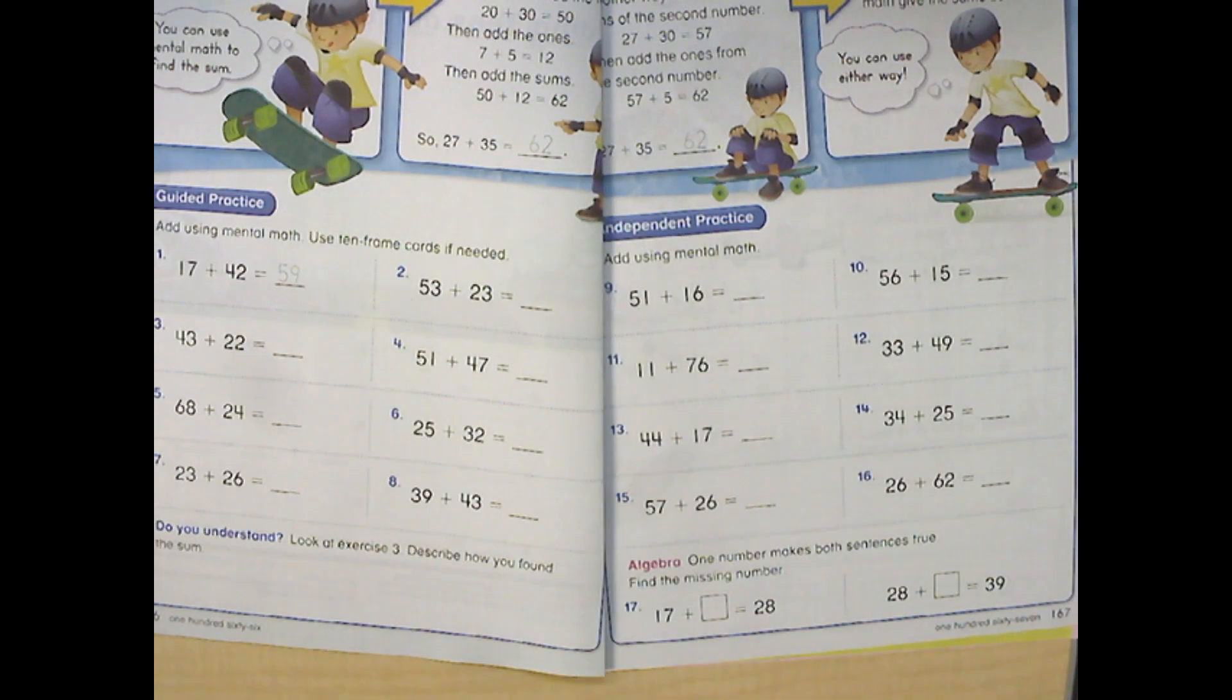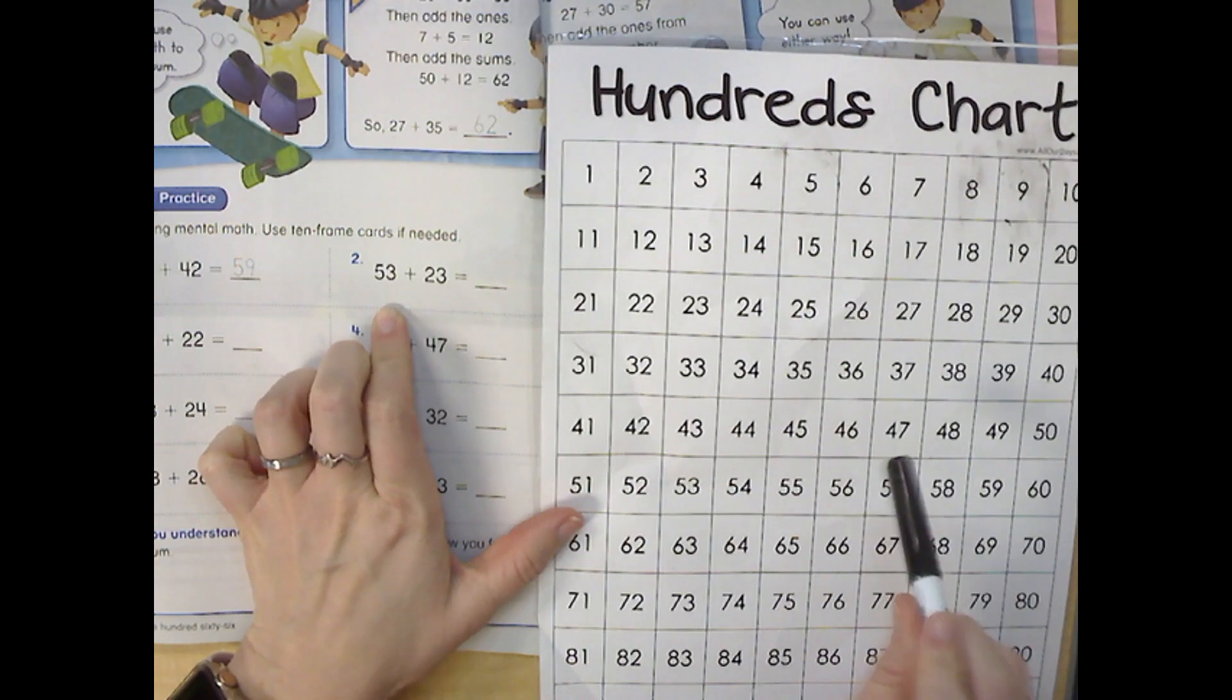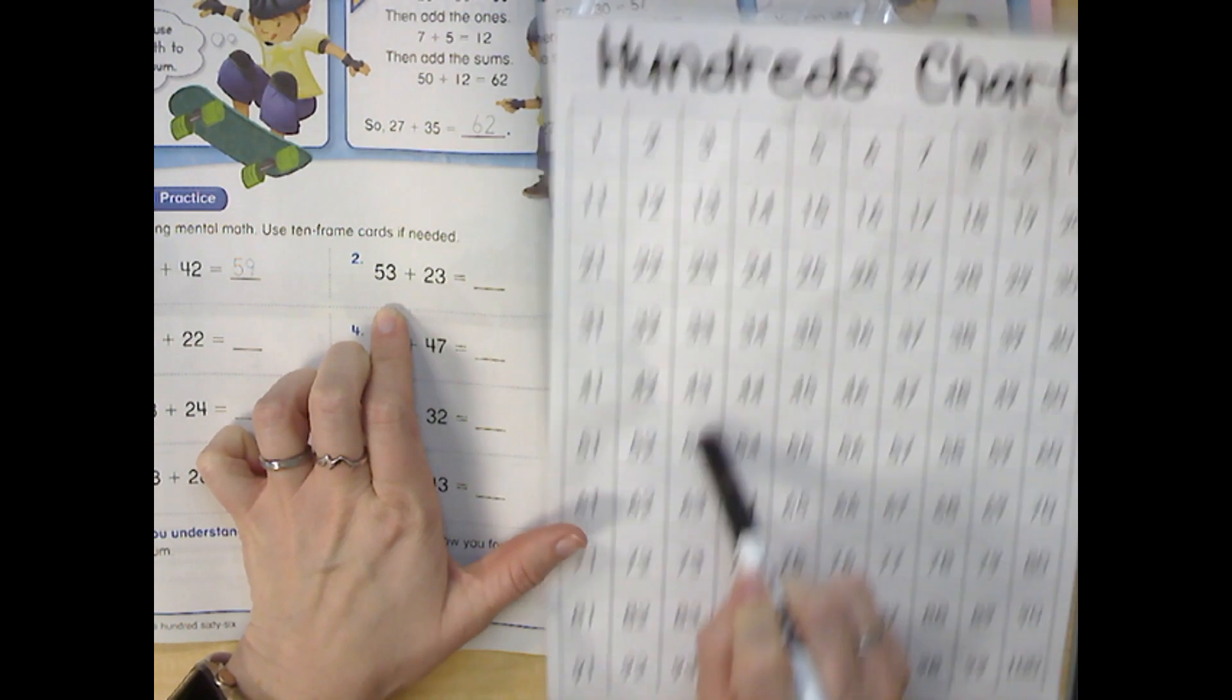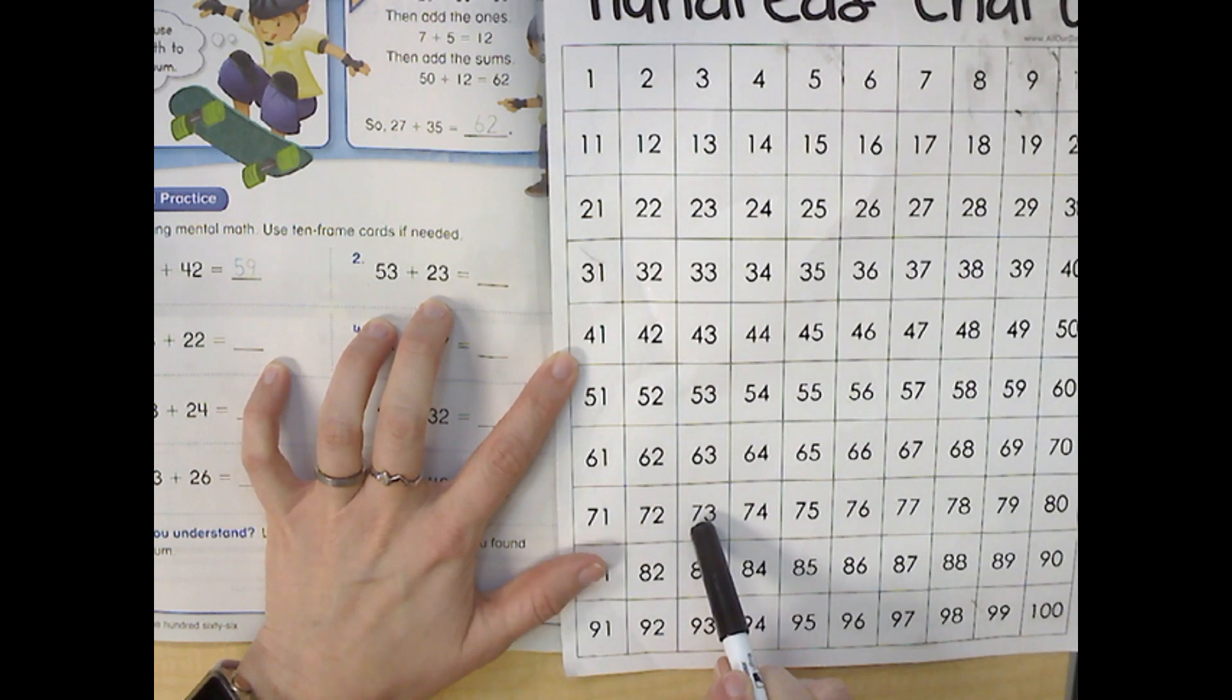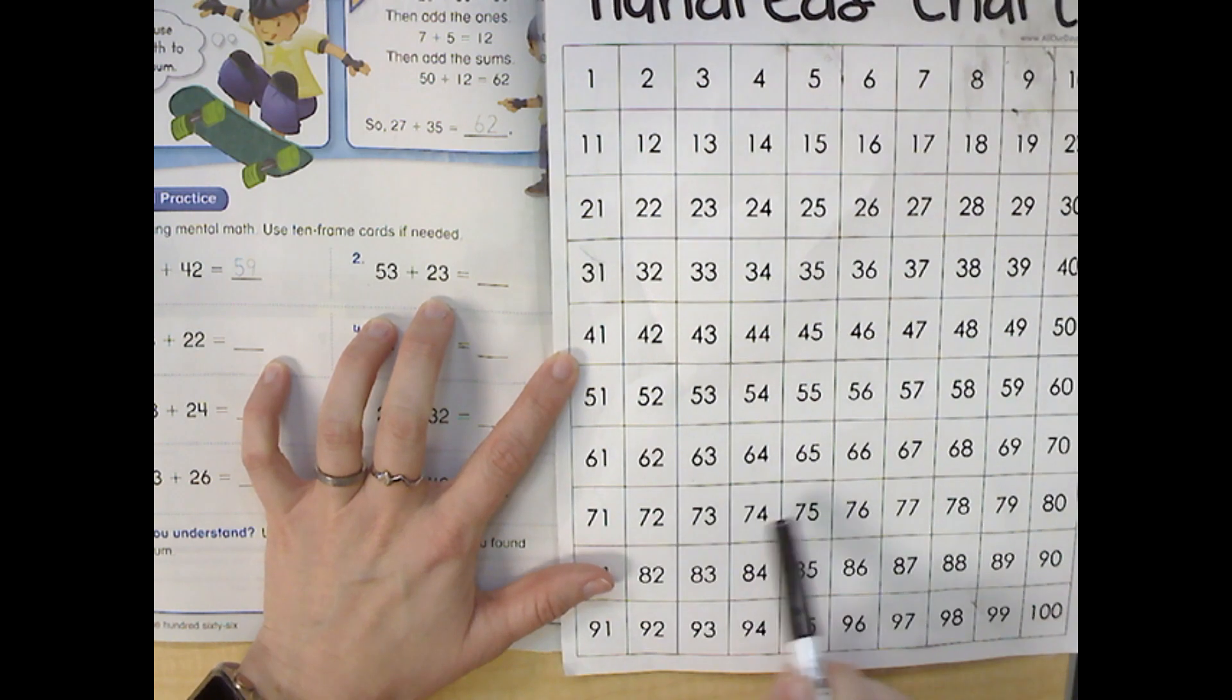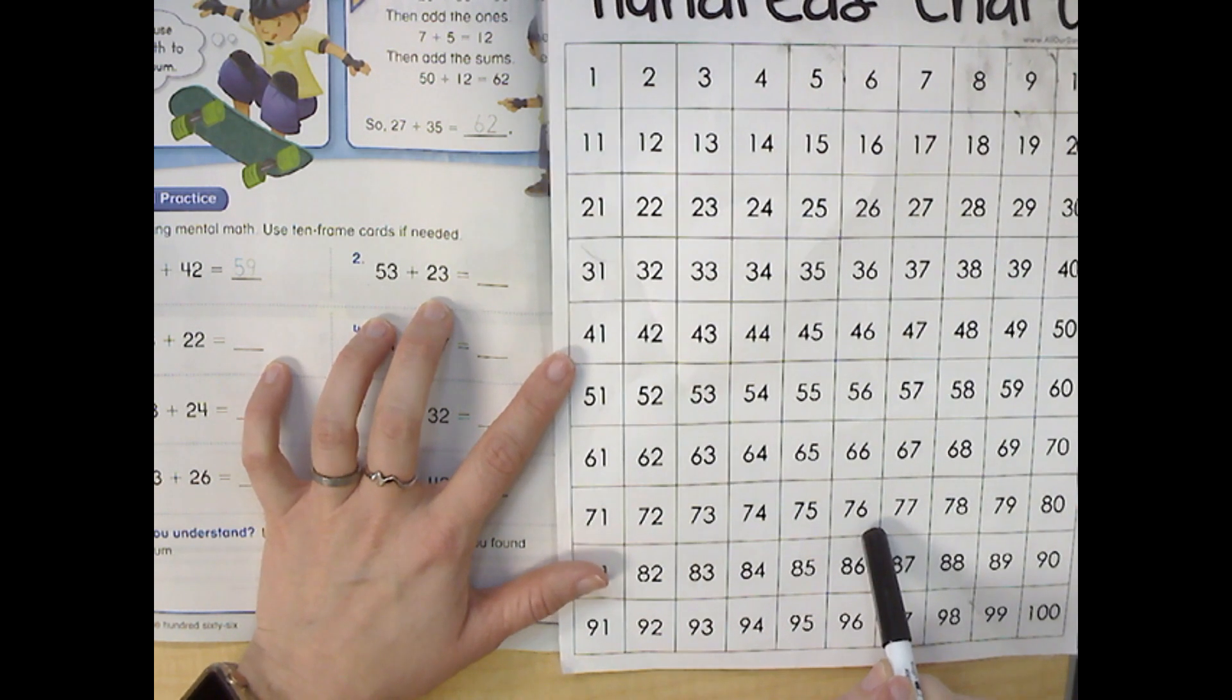You could use a 100 chart to solve it if you want as well. So if I was going to solve 53 plus 23, I would start at 53, and I would go down 20, 10, 20, and then I go over to 23, 21, 22, 23. My answer would be 76.